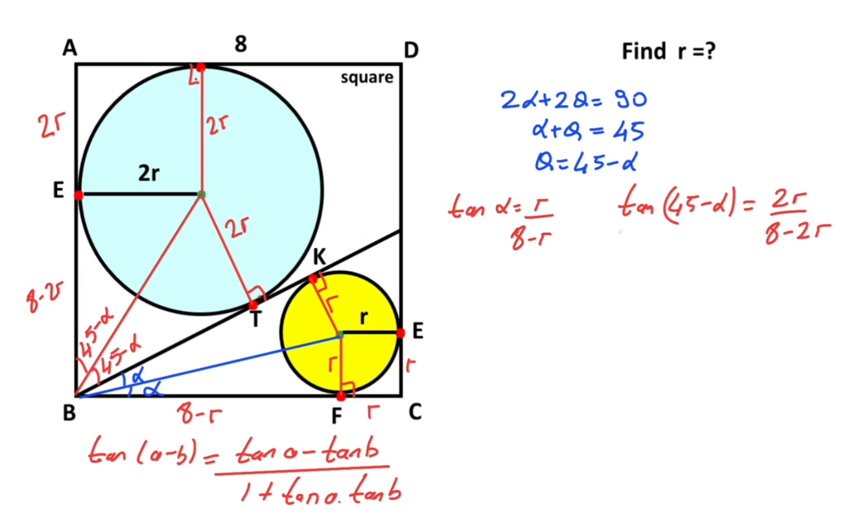Therefore, if we apply this property for the question, the expansion of tangent of 45 minus alpha equals tangent 45 minus tangent alpha over 1 plus tangent 45 times tangent alpha, equals 2r over 8 minus 2r.